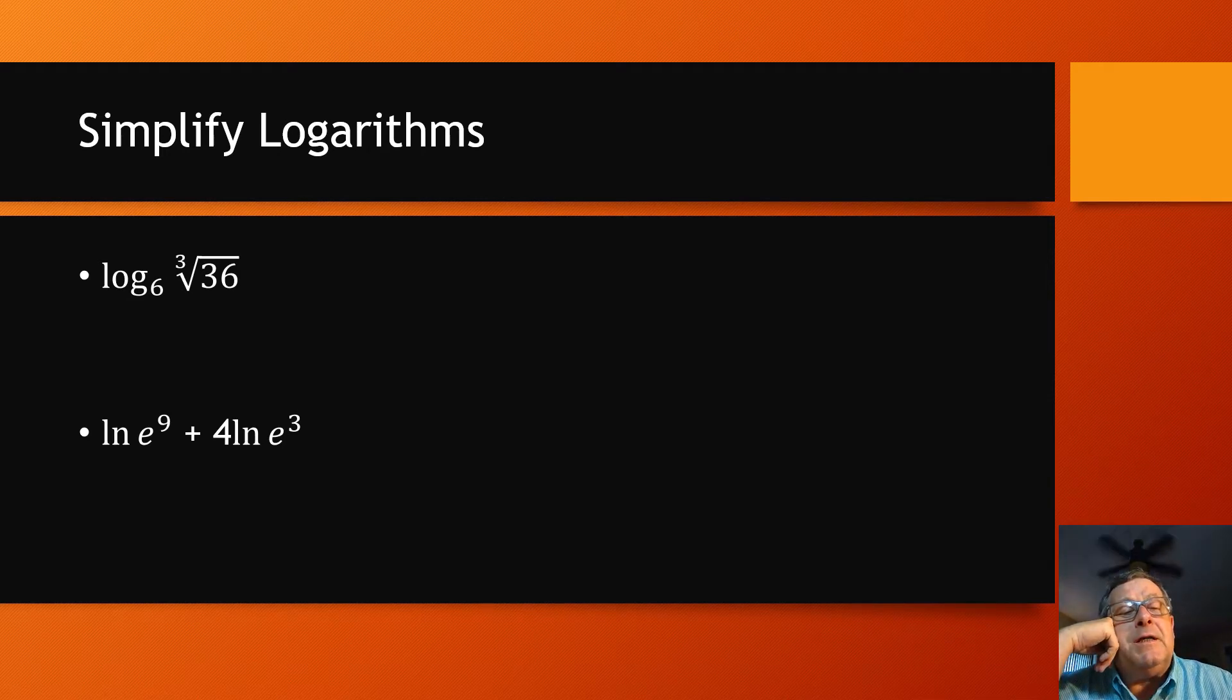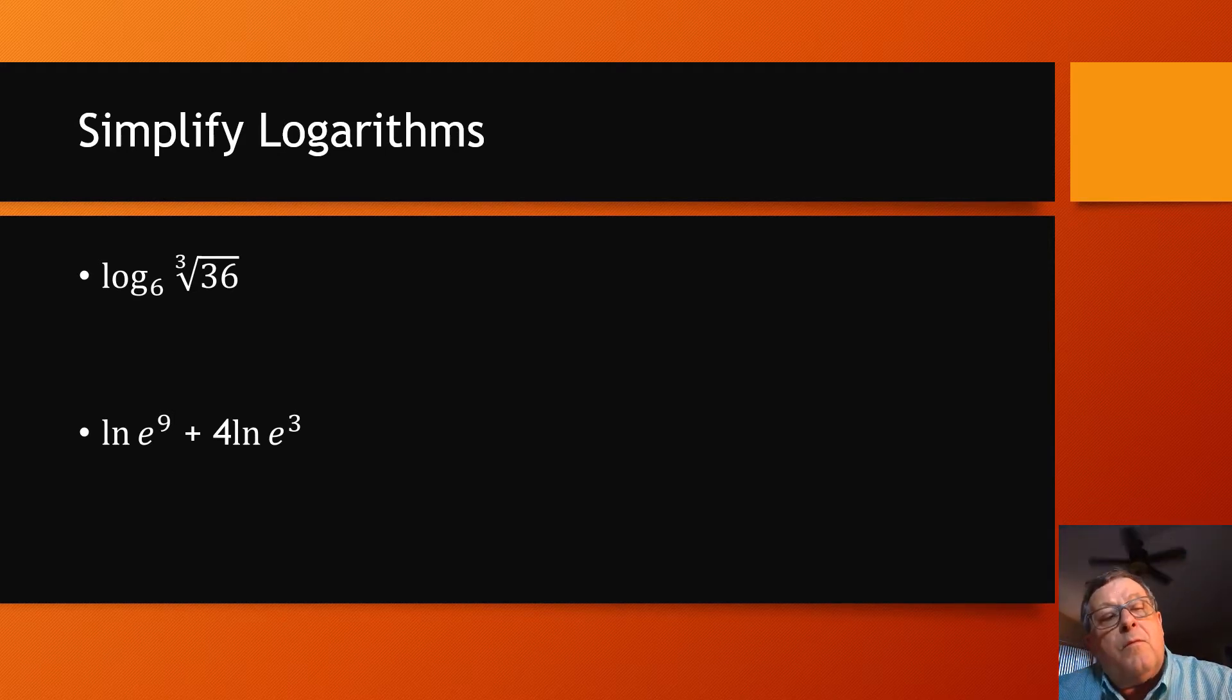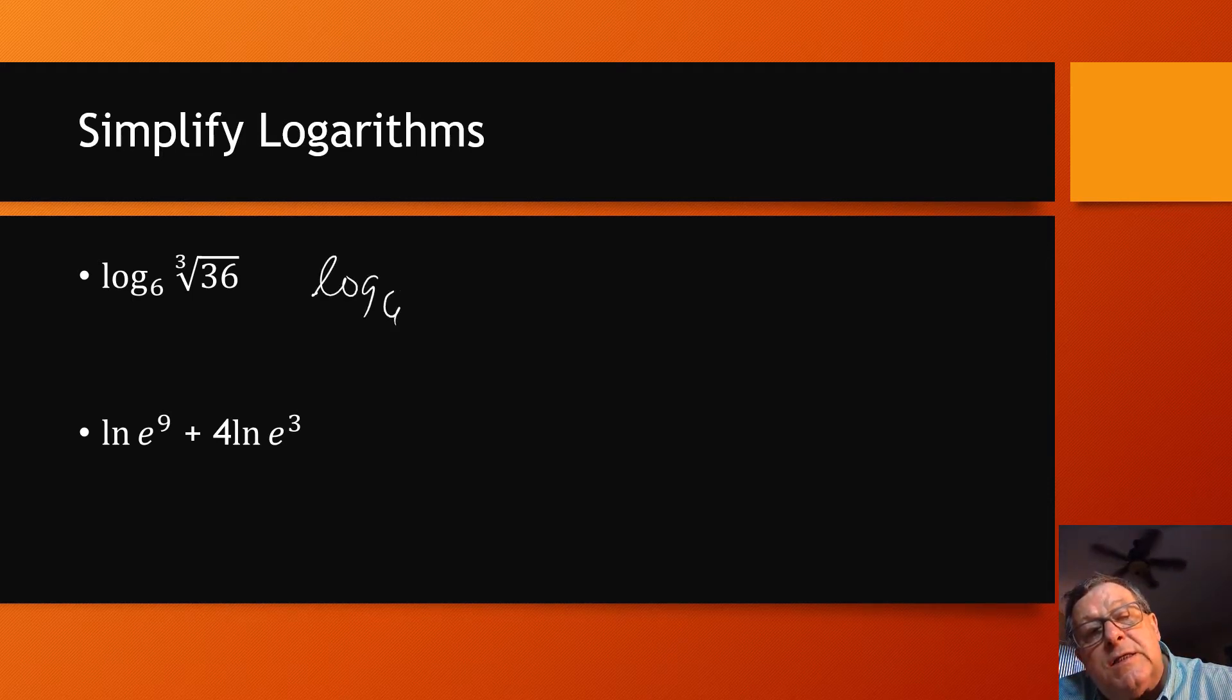So I'm looking at this cube root of 36. If I express that as a rational exponent, because 36 is 6 squared, right? And you may remember from our work with exponents, I could actually write that cube root of 36 as 6 raised to the power of 2 thirds as a rational exponent. So then that would give me log 6 of 6 to the 2 thirds power.